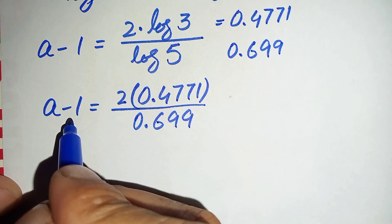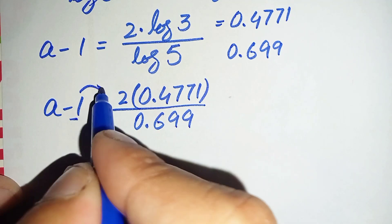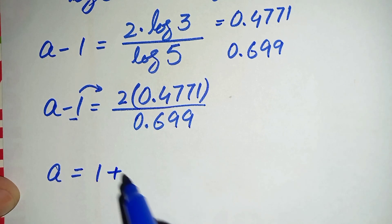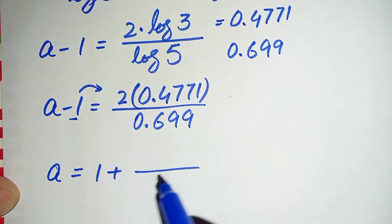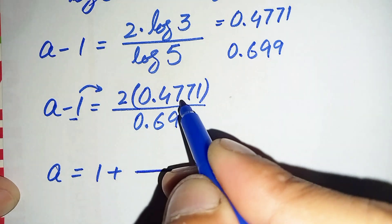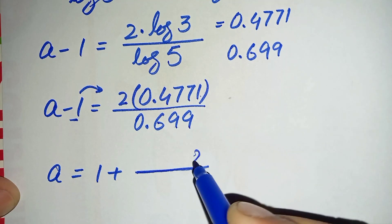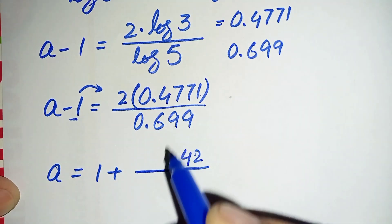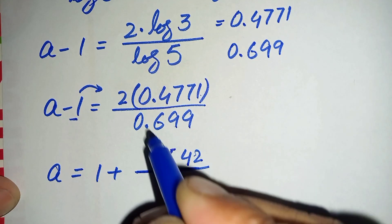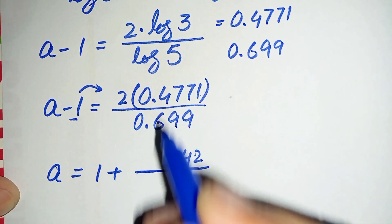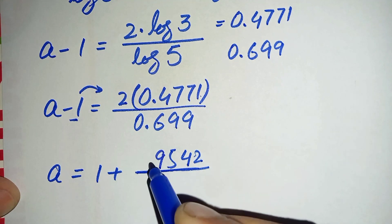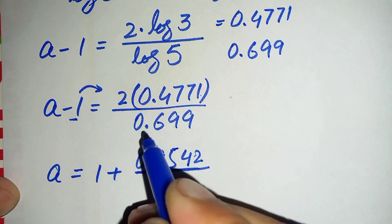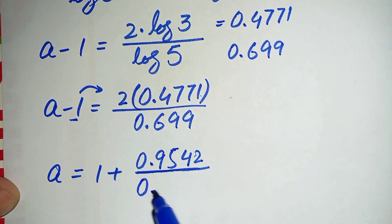We move the negative 1 to the right hand side so it becomes positive 1, giving a is equal to 1 plus the fraction. Multiplying 2 by 0.4771: 2 times 1 is 2, 2 times 7 is 14 carry 1, 2 times 7 is 14 plus 1 is 15 carry 1, 2 times 4 is 8 plus 1 is 9. So the numerator becomes 0.9542 over 0.699.